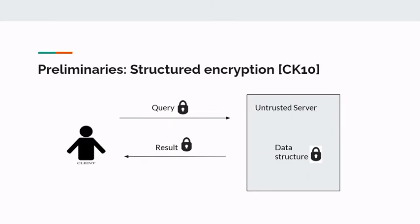Structured encryption, which was introduced by Chase and Camara, is a general cryptographic primitive that considers a scenario where a data owner, or commonly referred to as a client, wishes to store an encrypted data structure on a potentially untrusted server, such as a cloud provider. Structured encryption schemes should ensure that clients are able to perform all necessary data structure operations — a query or update — correctly over the server-stored encrypted data. The privacy goal is to reveal as little information about the contents of the outsourced data structure, as well as the operations performed on it. In particular, structured encryption schemes are defined by a leakage function that is an upper bound on the information that may be learned by the adversary, in this case the untrusted server.